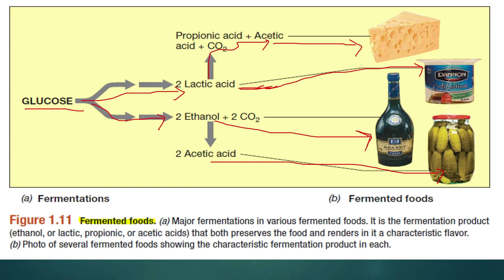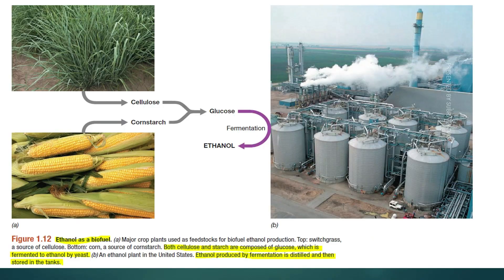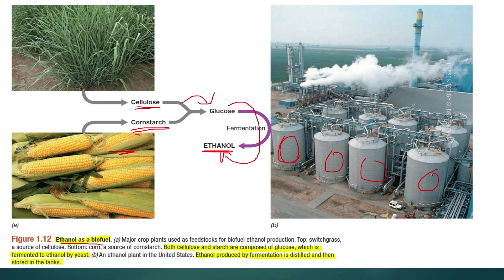The final important use of microorganisms is ethanol as a biofuel. Corn starch and cellulose — complex carbohydrate products — are broken down to glucose by microorganisms. Further fermentation produces ethanol. This ethanol is produced in industry and used as a biofuel for many purposes. In this way, microorganisms are very beneficial for industrial, agricultural, and human health purposes.